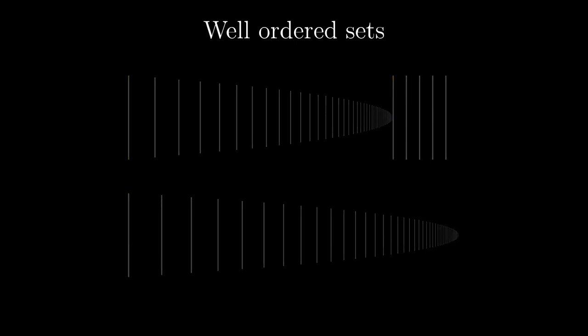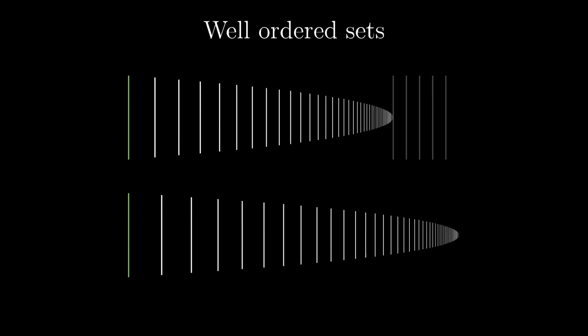Let's take two well-ordered sets and run the transfinite recursion simultaneously on both of them. That is, we set the zero case at the same time, then we proceed with the first successor step at the same time, the second one and so on. We stop at the moment when one of the sets is filled.